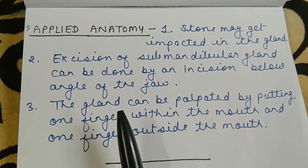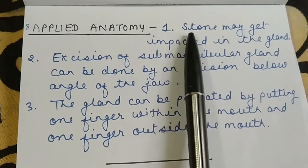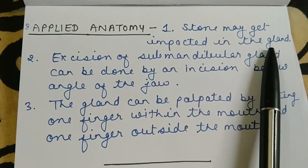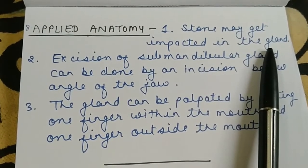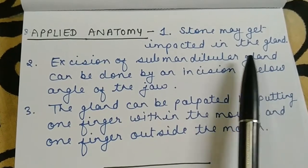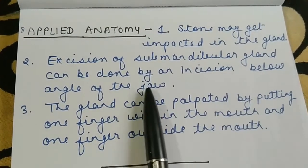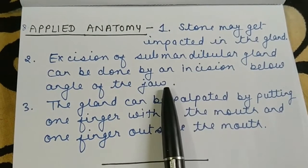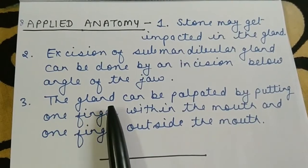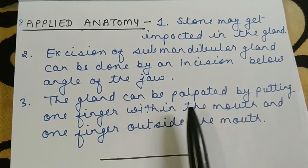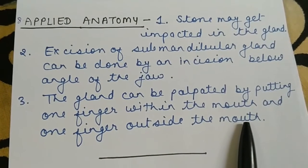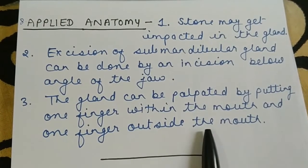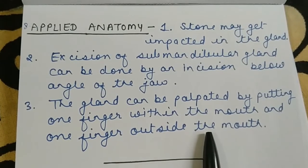The last point is applied anatomy of the submandibular salivary gland. First, a stone may get impacted in the gland, blocking the duct. Second, excision of the submandibular gland can be done by an incision below the angle of the jaw. Third, the gland can be palpated by putting one finger within the mouth and one finger outside the mouth, so it can be easily palpated.